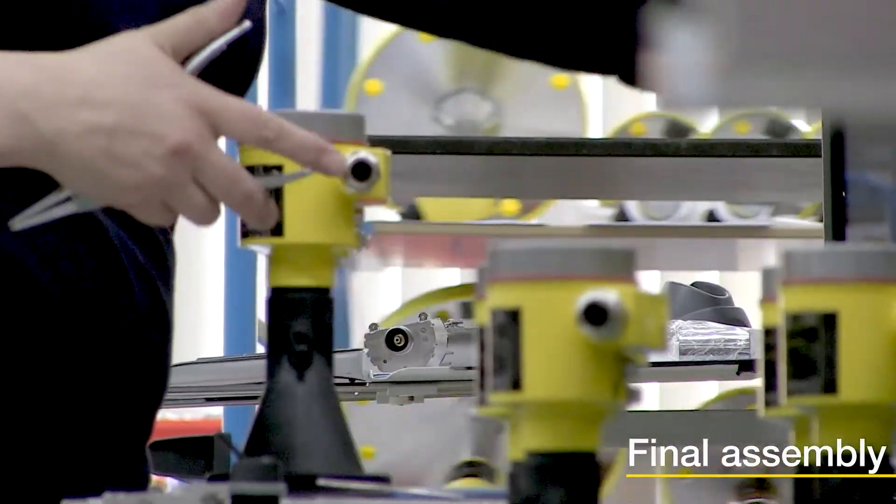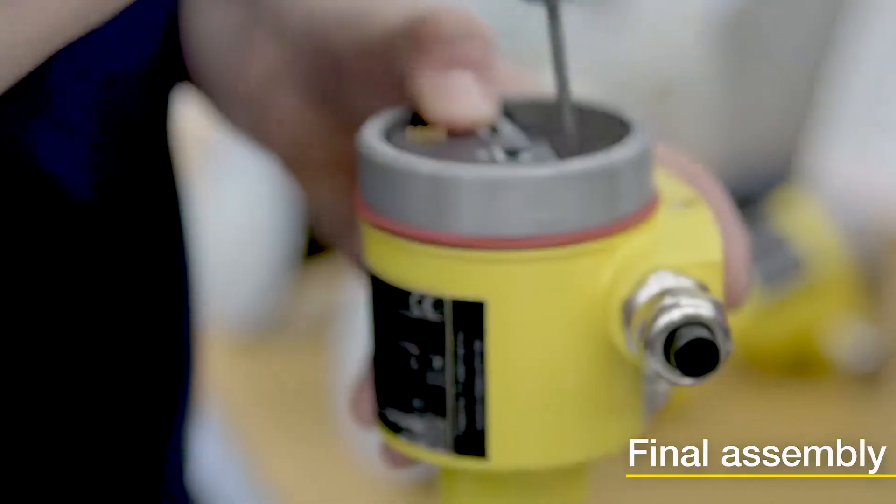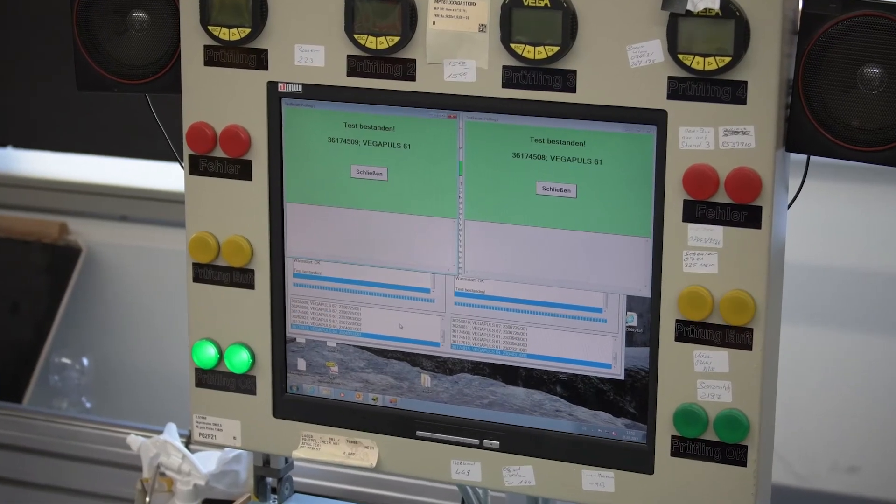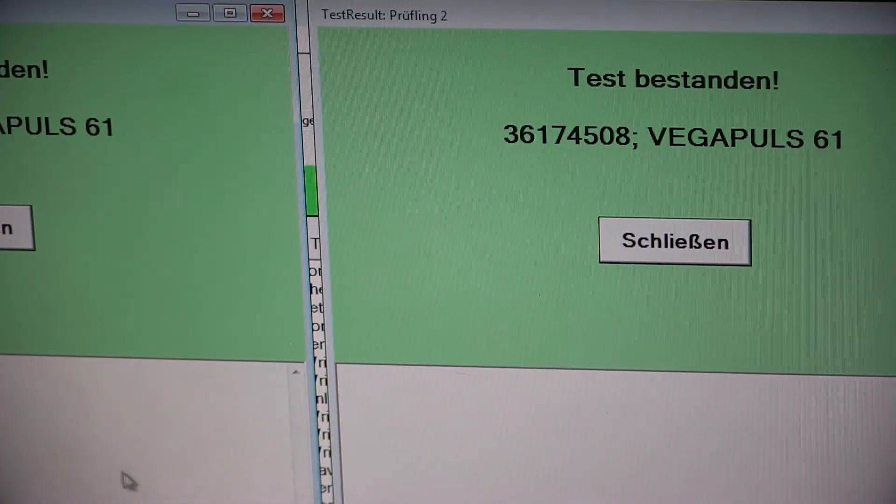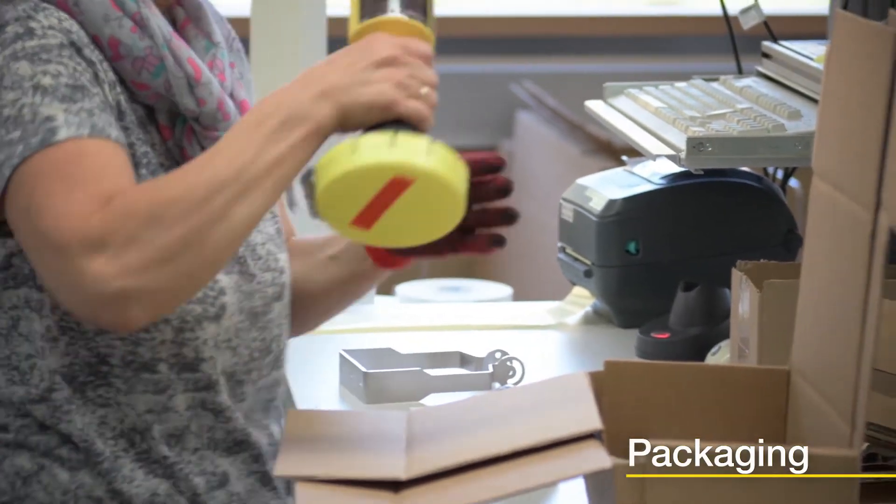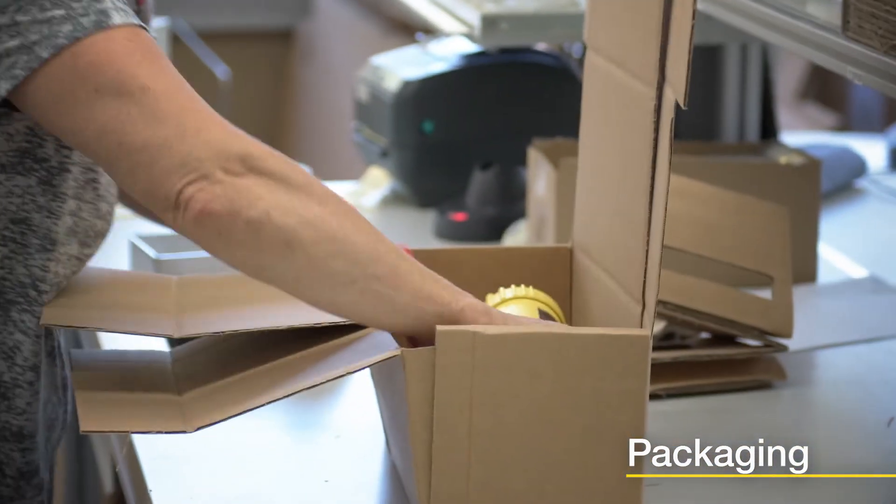An electronics module is not yet a whole instrument. It still has to be installed in a housing. The housing is then connected to the sensing element and a final function test is carried out. Finally, the radar sensor is packed and sent to the customer.